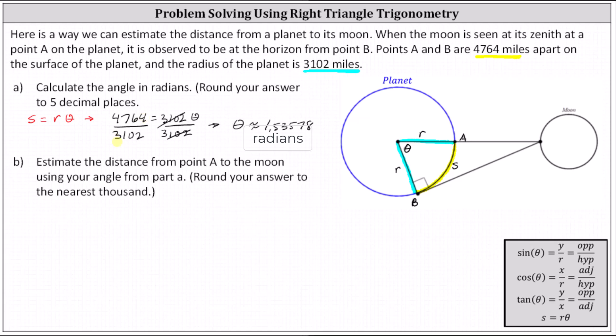Part B, estimate the distance from point A to the moon, which, going back to the diagram, is this distance here, point A to the moon. Let's go ahead and label this D.